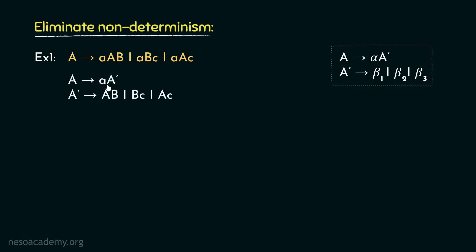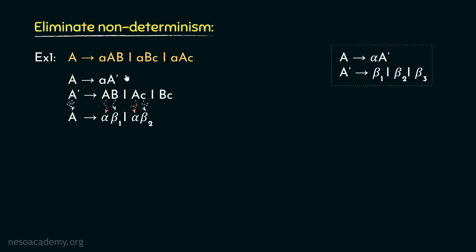A's production rule is now completely free from non-determinism. However, A prime is still non-deterministic. If we consider A prime as the generic non-terminal, observe that in two of its productions, the uppercase A's are the common prefixes or alphas. So, b here will be beta 1, and small c is beta 2. These productions should now be rephrased as: A prime can be rewritten as A — the common prefix — followed by a new non-terminal, A double prime, from which we produce the betas. So, A double prime can be rewritten as b — beta 1 — or small c — beta 2.